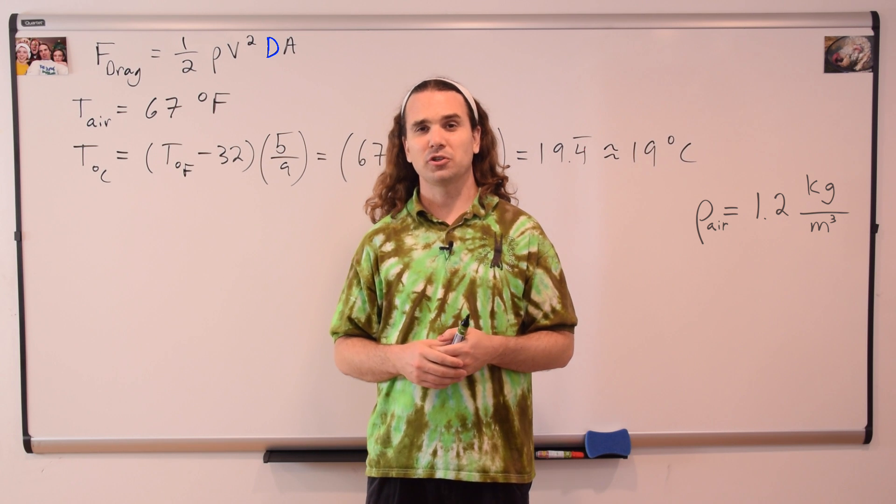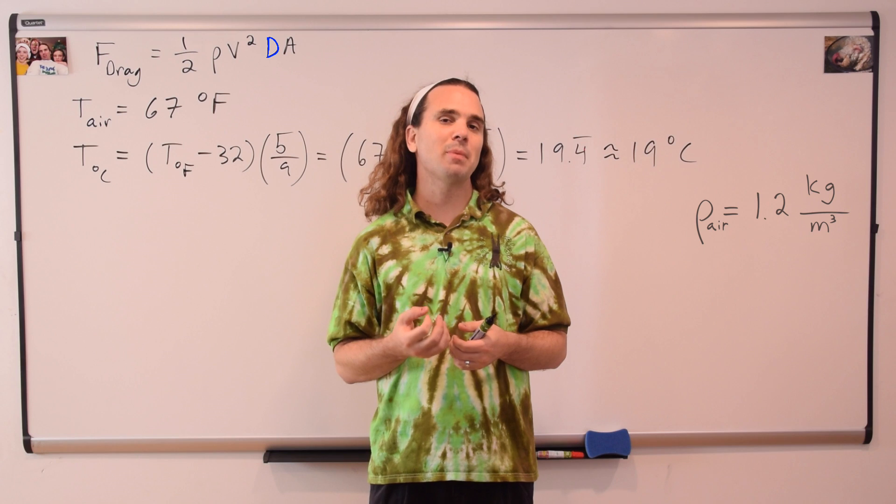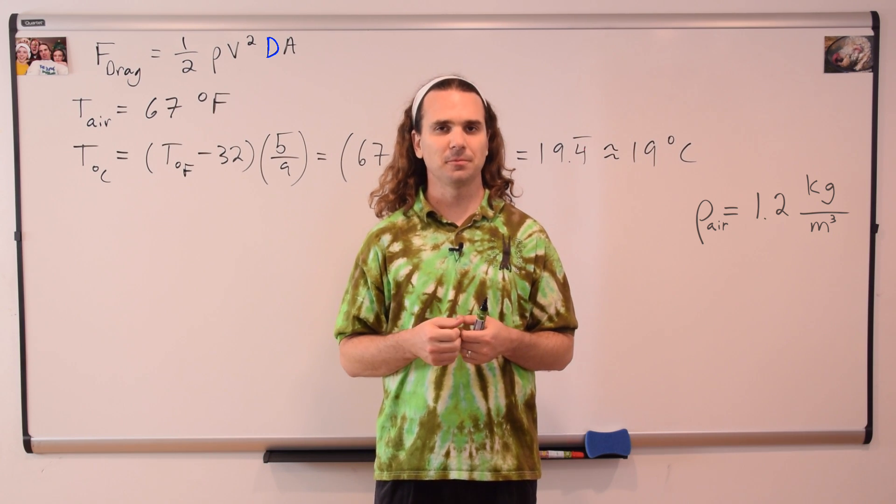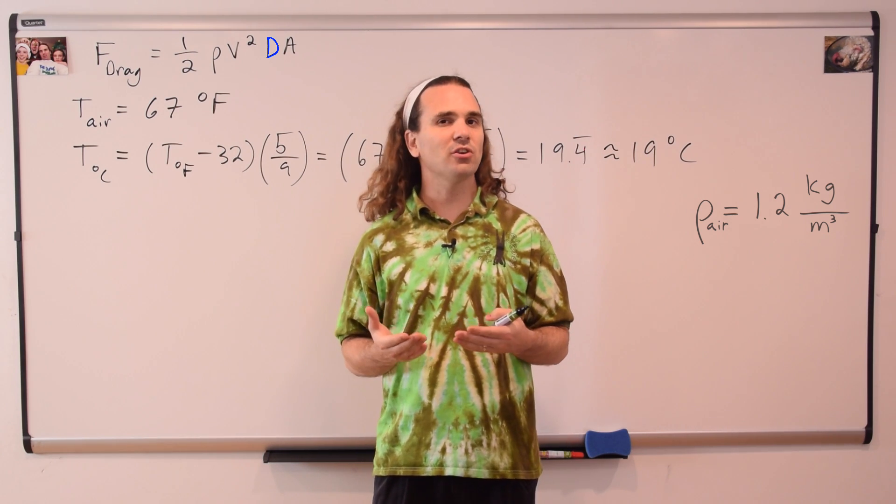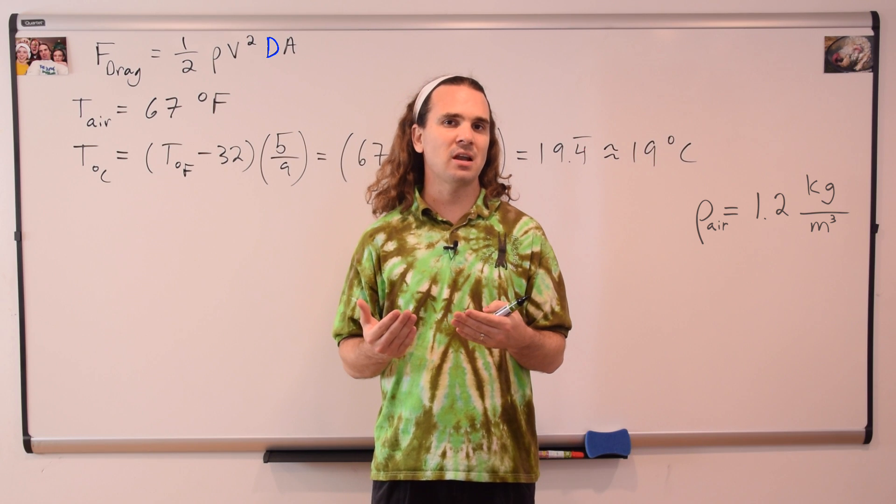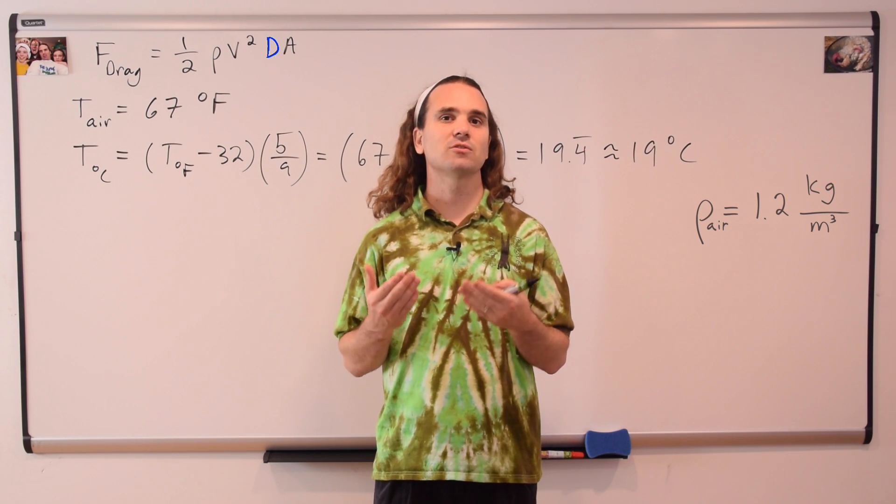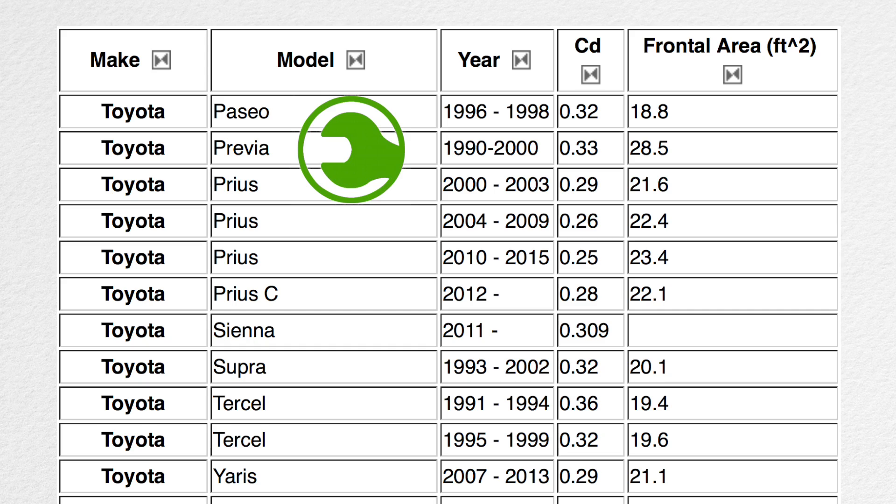The drag coefficient, like the coefficient of friction, is an experimentally measured value. Basically, the easier it is for air to move around an object, the lower that object's drag coefficient. According to EcoModder, 0.25 is the drag coefficient of a 2011 Toyota Prius,